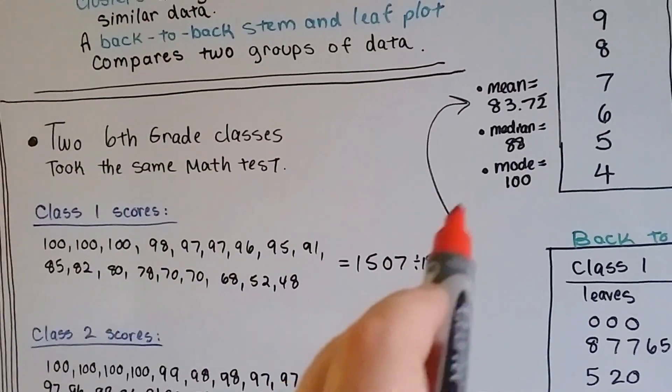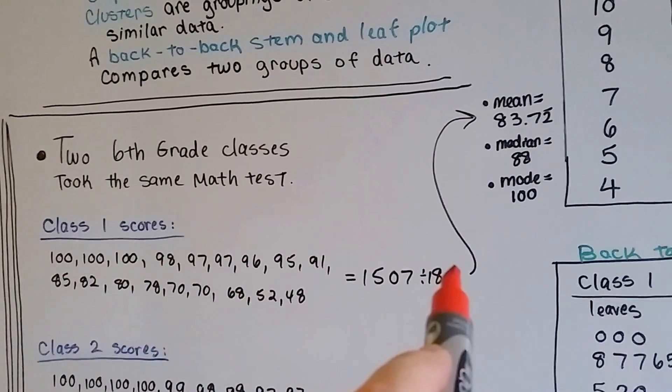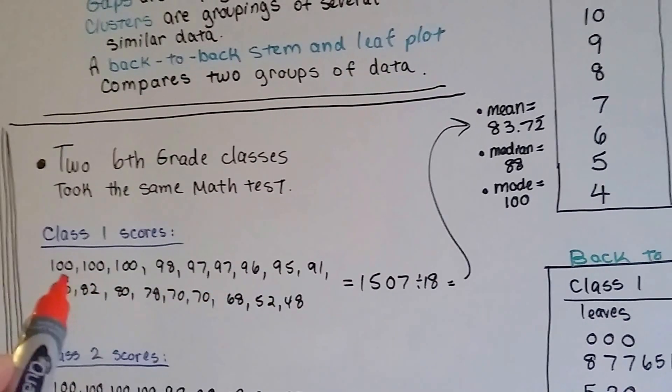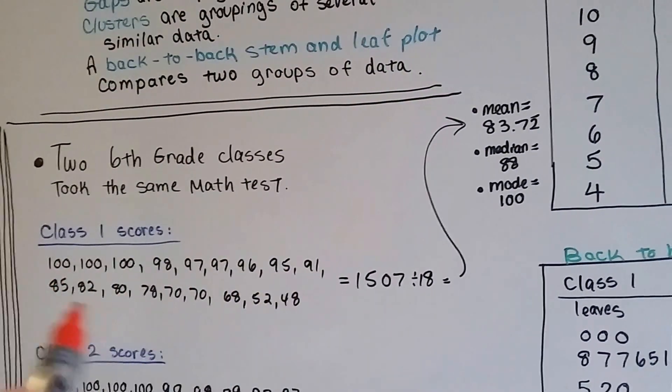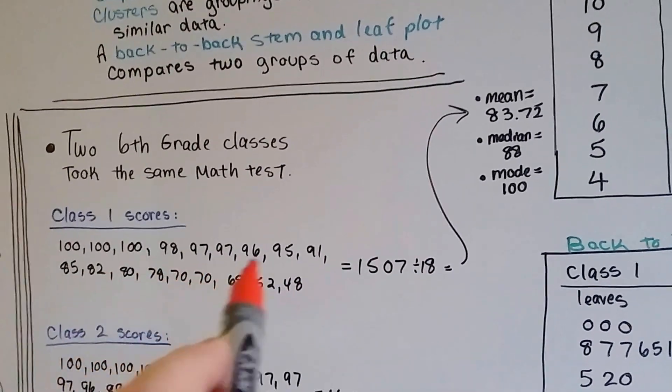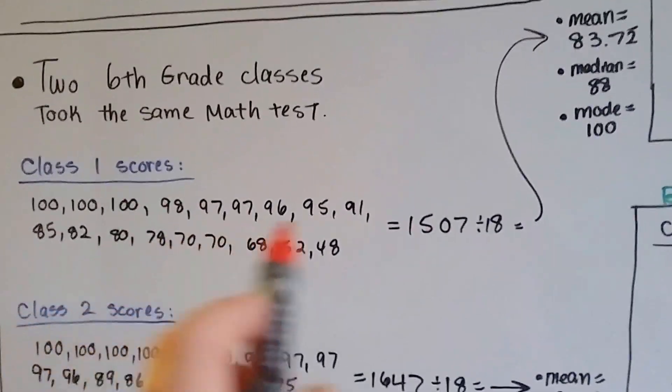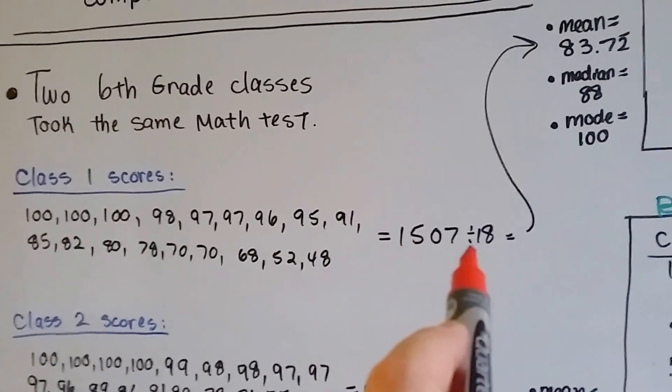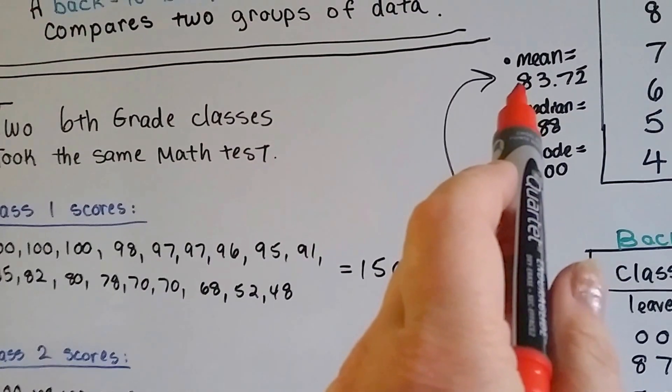When we did the mean, median, and mode for class one, what we did was we totaled up all these scores and came up with 1,507. Because there were 18 students taking the test and 18 scores, we divided the 1,507 by 18, and that gave us the mean,